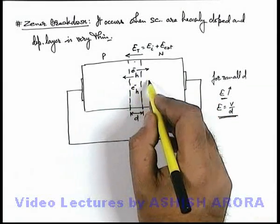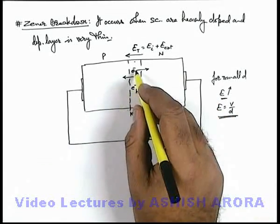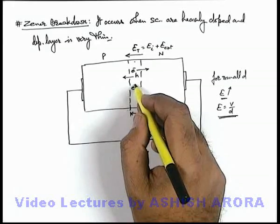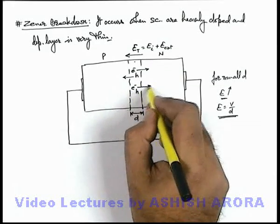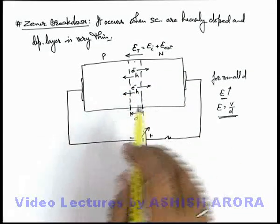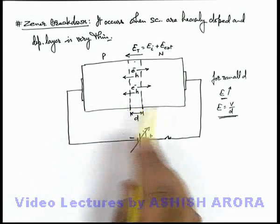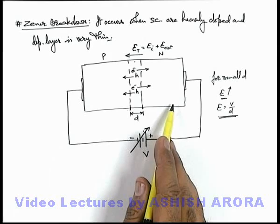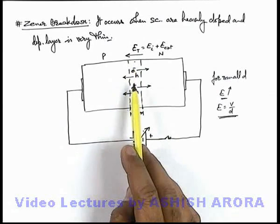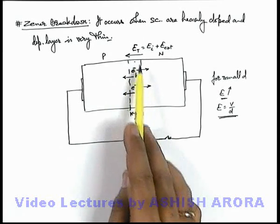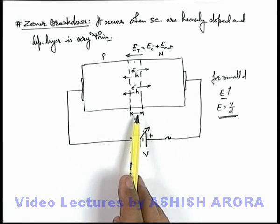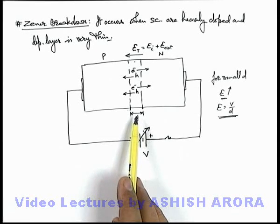So this is the phenomenon of how a breakdown takes place. Due to continuous generation of electron-hole pairs, continuous flow of electrons and holes in the circuit is maintained, and a very high amount of current flows. The voltage across the junction is maintained because the electric field is kept at the breakdown strength of the depletion layer. This is the way how we explain the phenomenon of Zener breakdown.